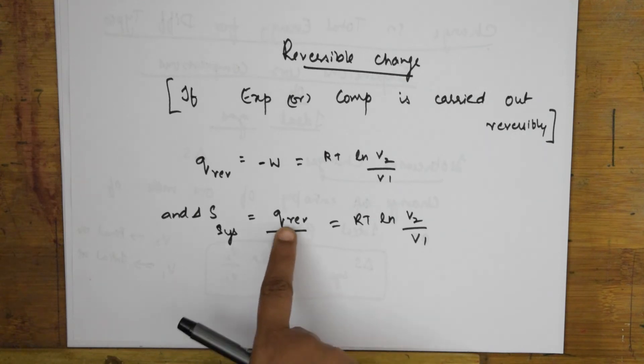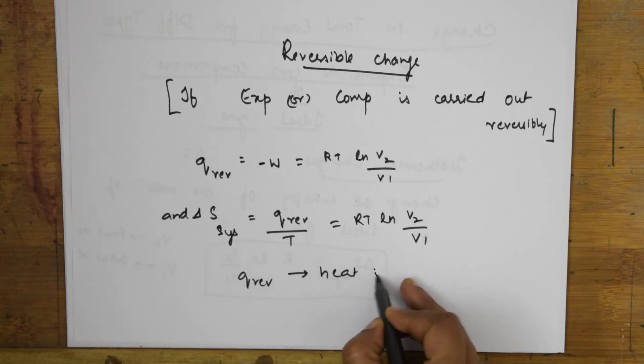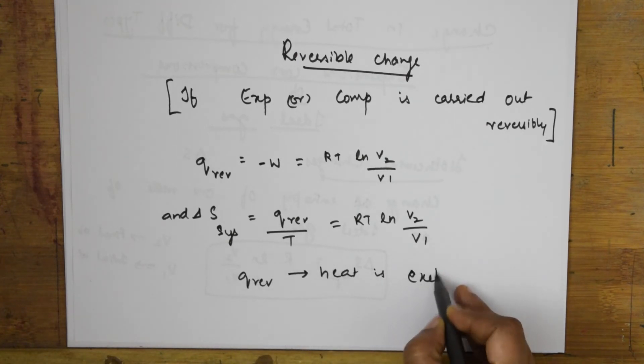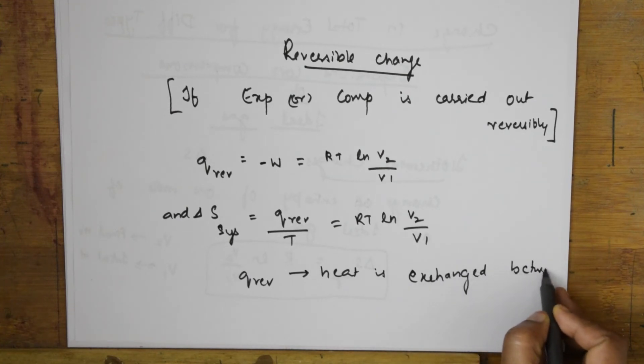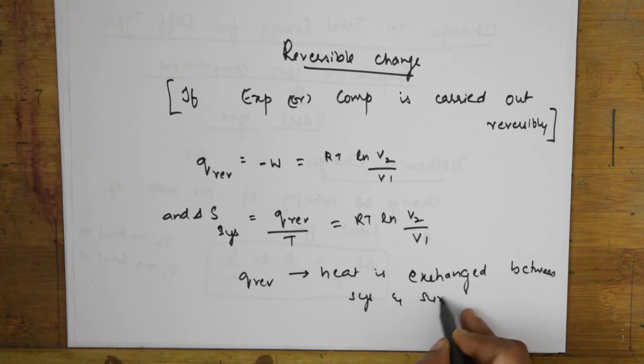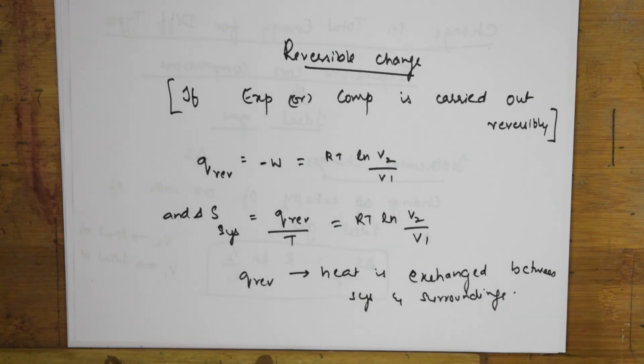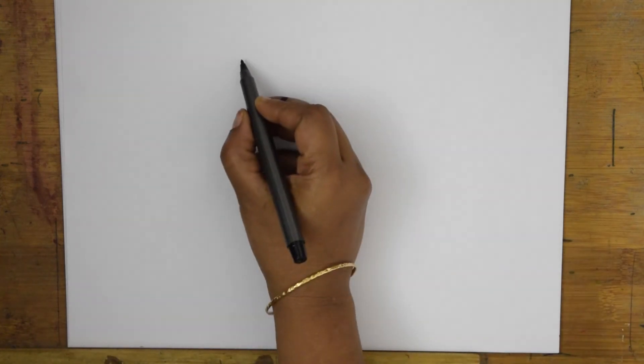Now q reversible, what happens? Heat is exchanged reversibly between system and surroundings at temperature T because it is an isothermal change. So this q reversible, heat is exchanged between system and surroundings at temperature T.